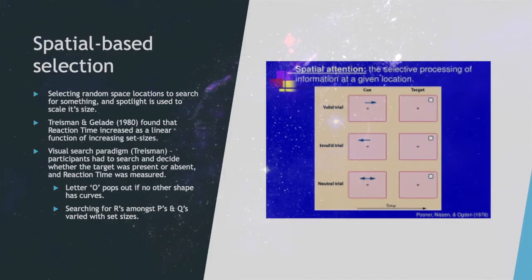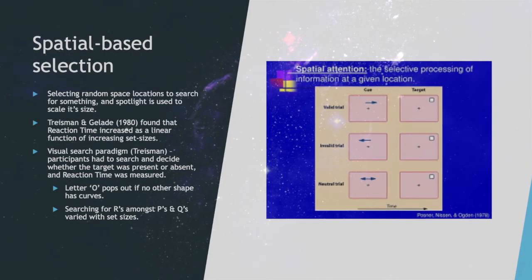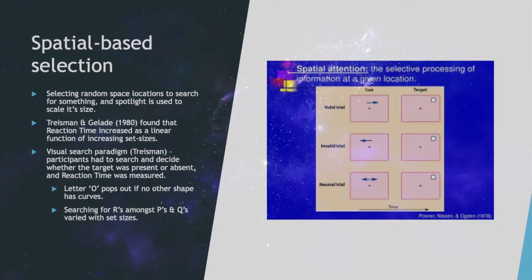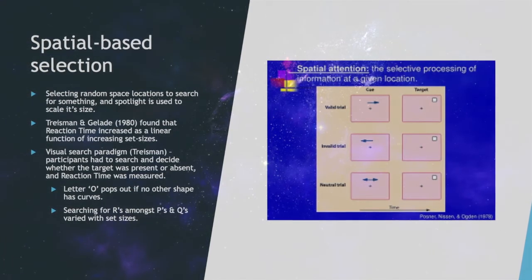Spatial-Based Selection is the selecting of random space locations to search for something, and a spotlight is used to scale its size.